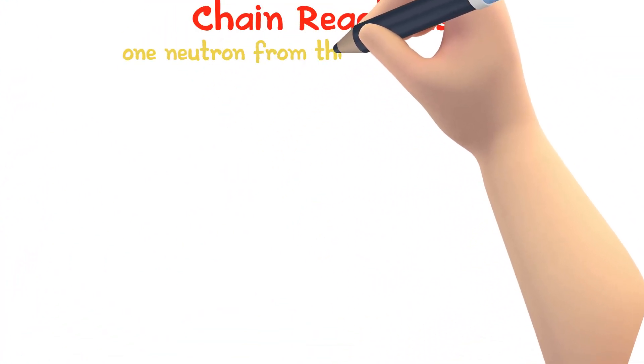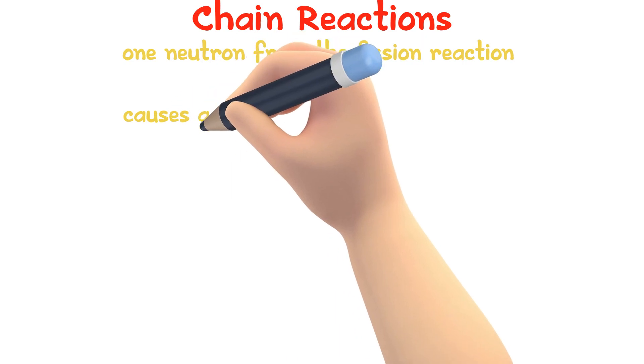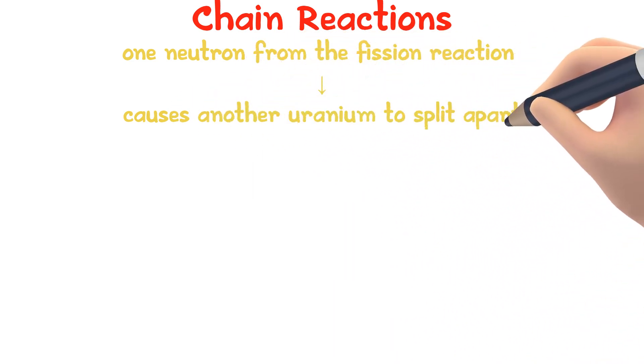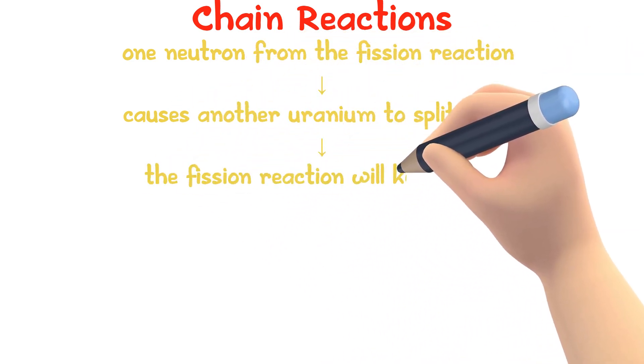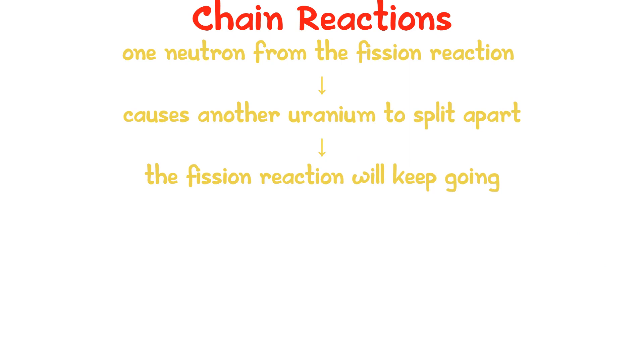If one neutron from the fission reaction causes another uranium-235 to split, then the fission reaction will keep going. This is called a chain reaction.